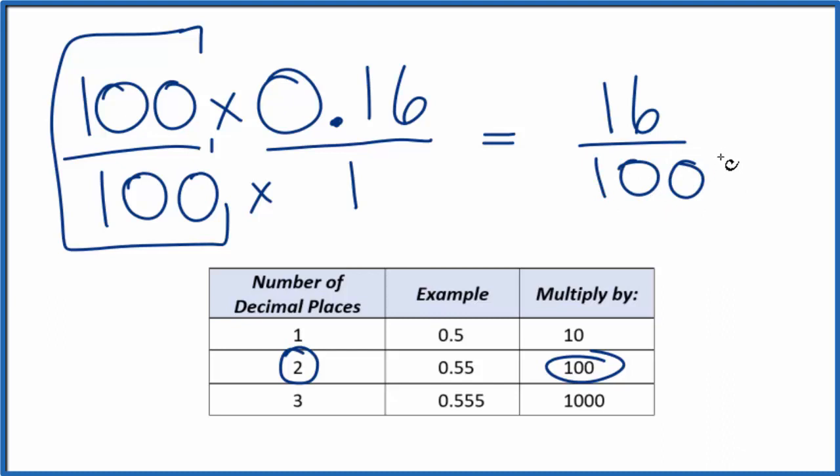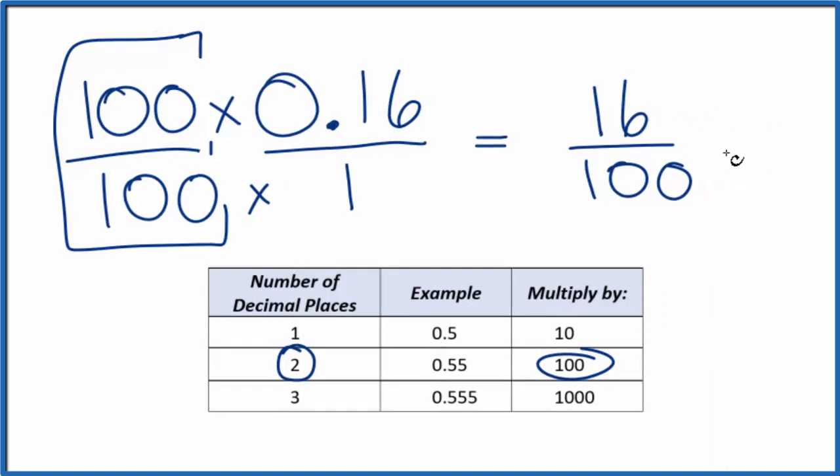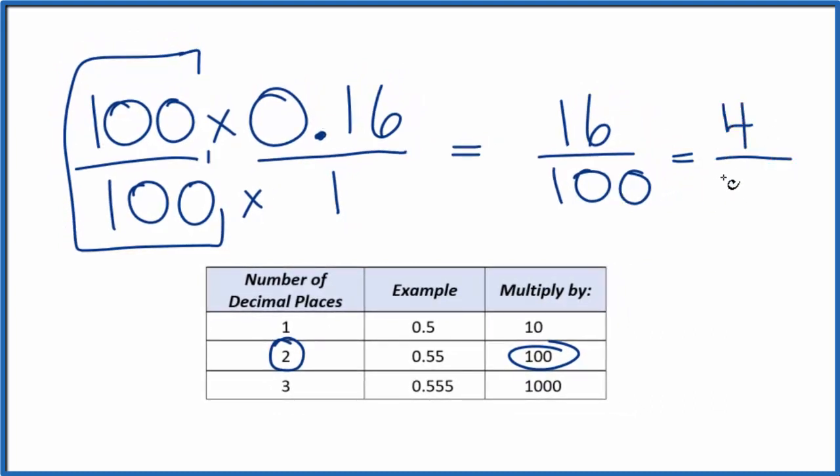We can just reduce it to simplest form. 4 goes into 16 four times and goes into 100 twenty-five times. I really can't reduce this down any further. So 0.16, that as a fraction would be 4 twenty-fifths.